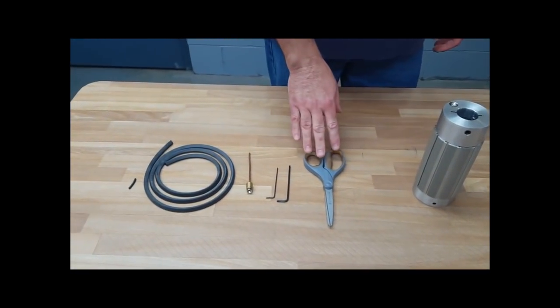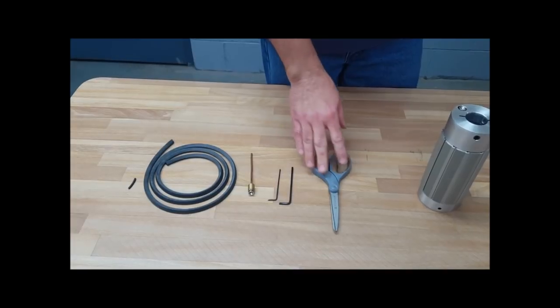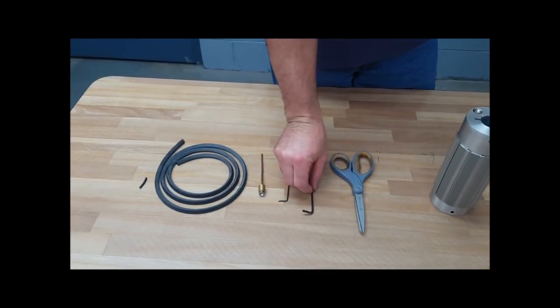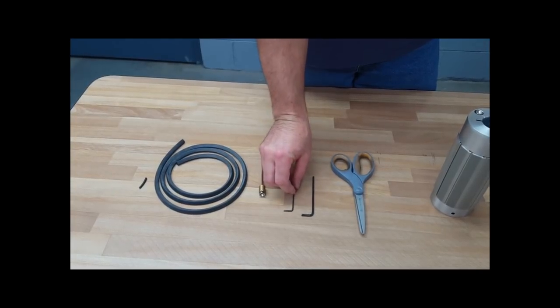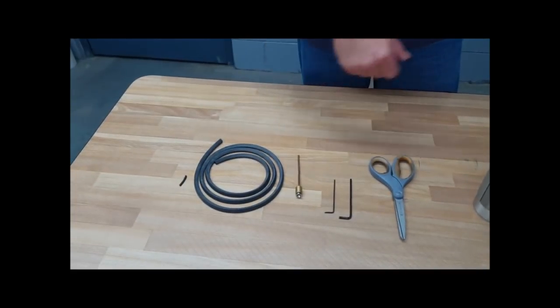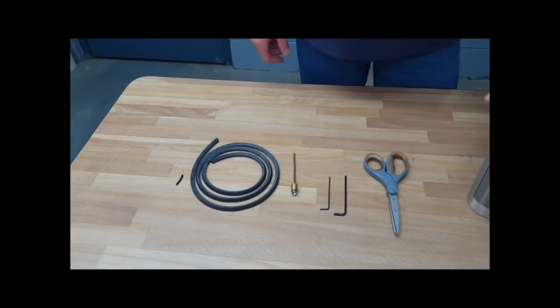It's going to require simple basic tools: scissors or a knife, a 1/8th Allen wrench, 5/64 Allen wrench, and that's all you really need to disassemble a CAC CoreLock air chuck.